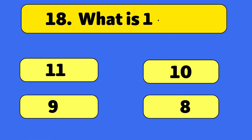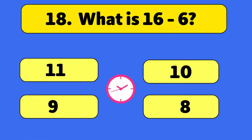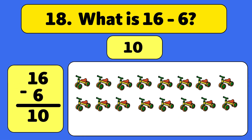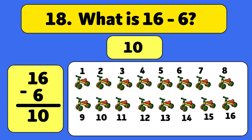What is 16 minus 6? The answer is 10. We start with 16 bicycles and take away 6. Let's count: 1, 2, 3, 4, 5, 6. We have 10 bicycles left.